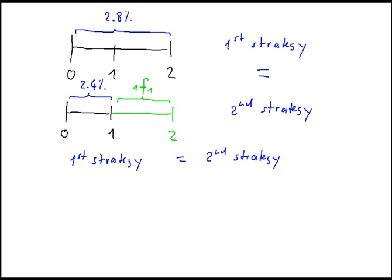Assume we invest $100 at the beginning of the period. Using the first strategy, the $100 grows at 1 plus the 1-year spot rate of 0.028 divided by 2, raised to the power of 2. Each period is 6 months, so the rate per period is 2.8% / 2 = 1.4%, and we raise to the power of 2 for two periods. This must equal the outcome of the second strategy.